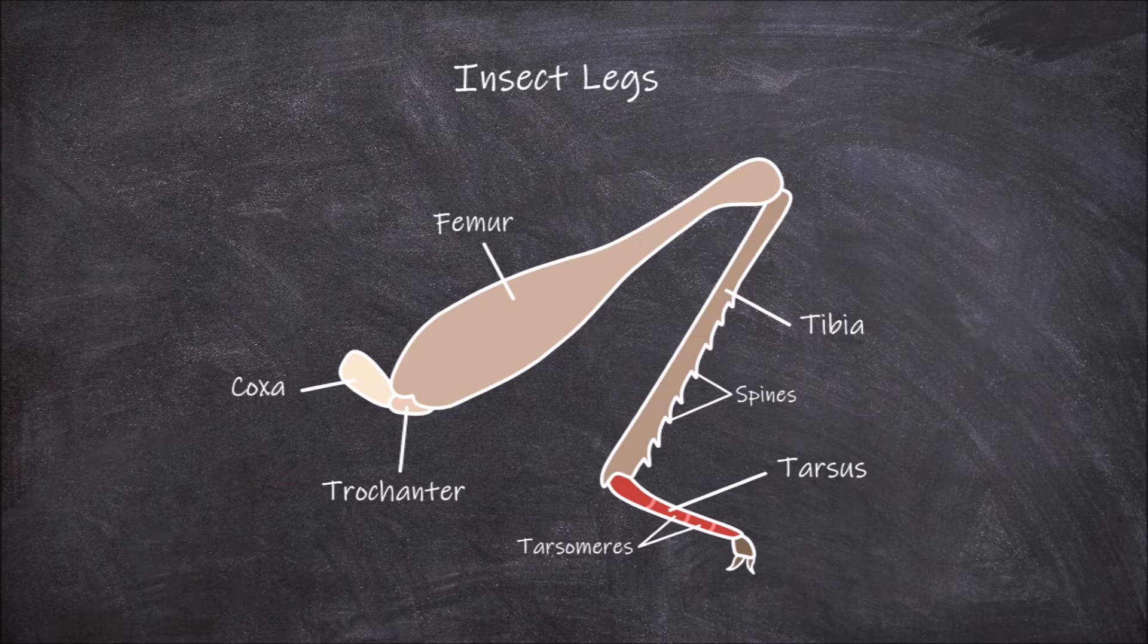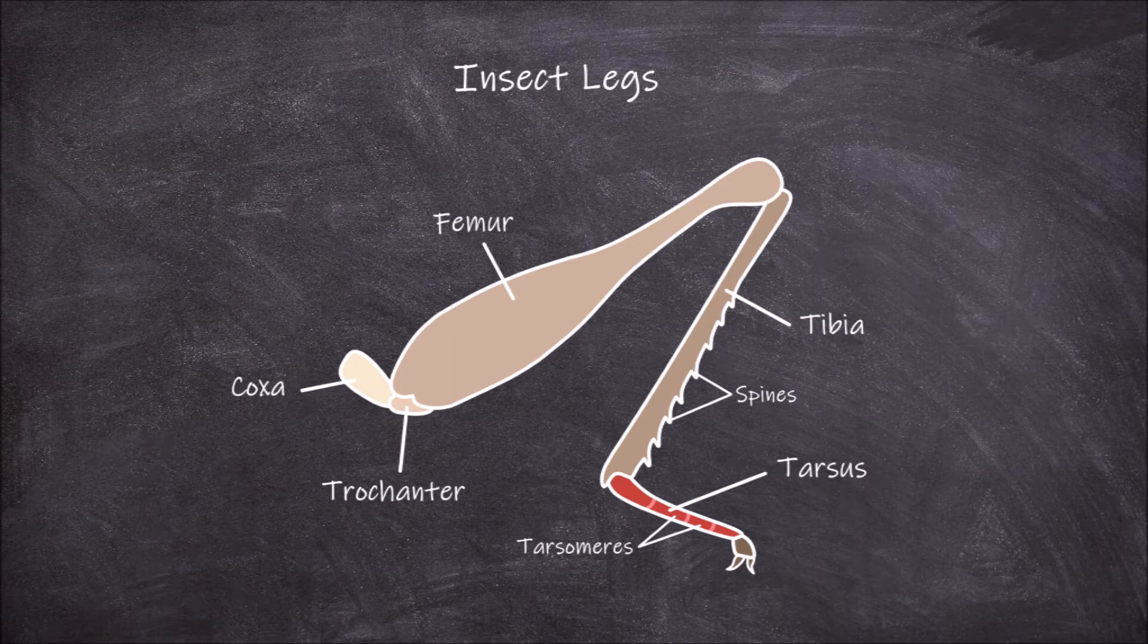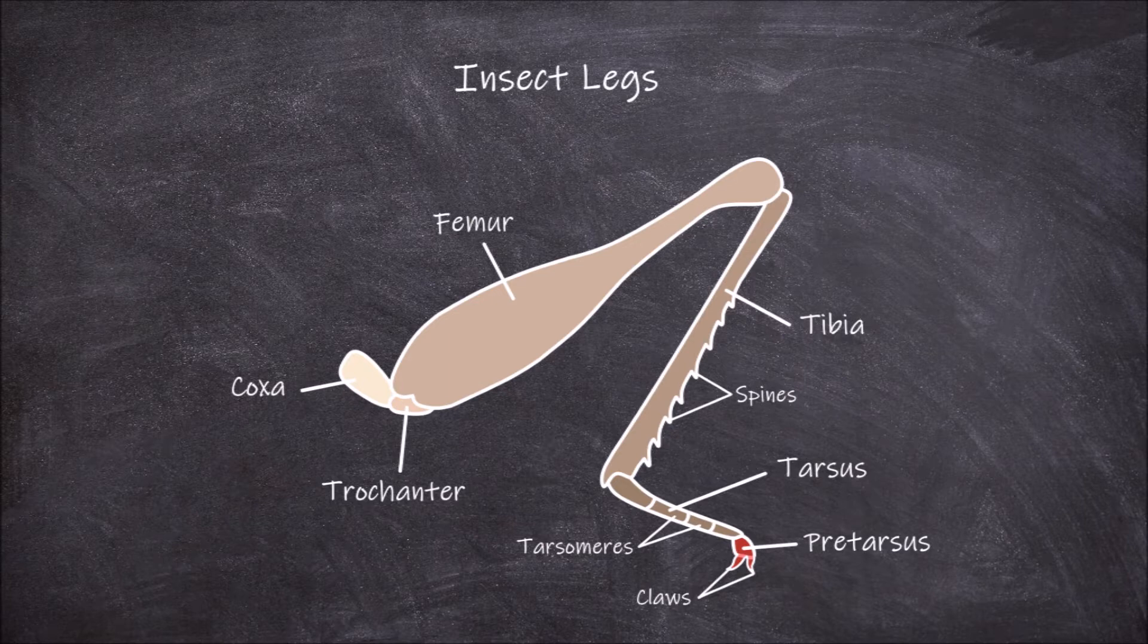Distally it articulates with the sixth and final segment, the pretarsus. The pretarsus is small and bears the claws of the leg.